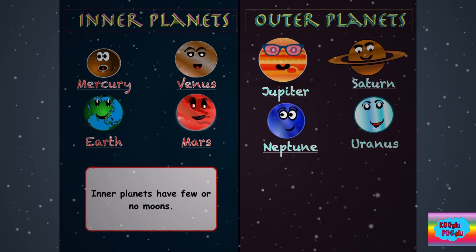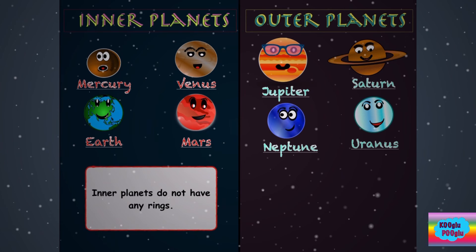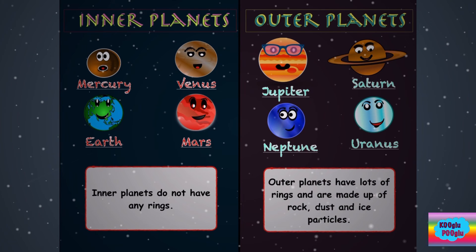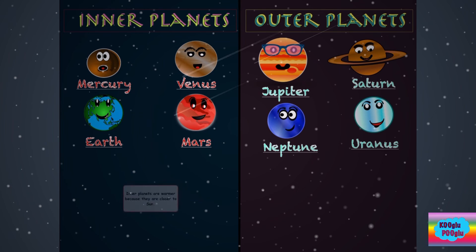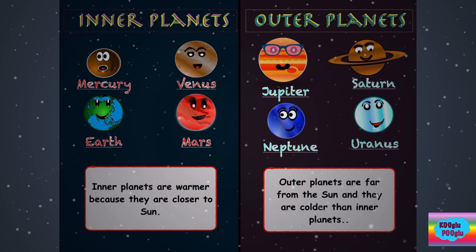Inner planets have few or no moons, and outer planets have plenty of moons. Inner planets do not have any rings. Outer planets have lots of rings and are made up of rock, dust, and ice particles. Inner planets are warmer because they are closer to the sun, and outer planets are far from the sun and are colder than inner planets.